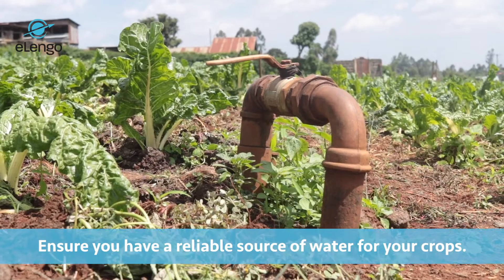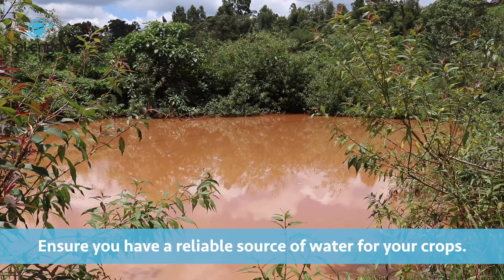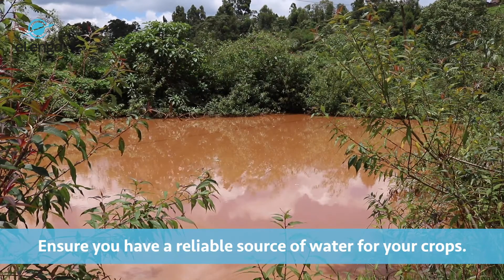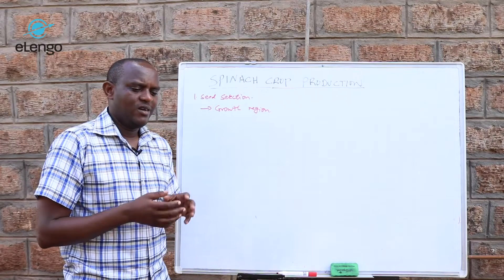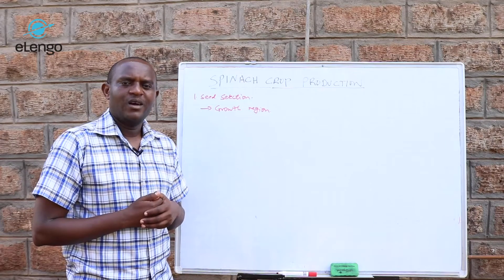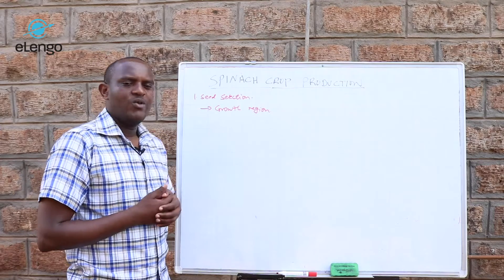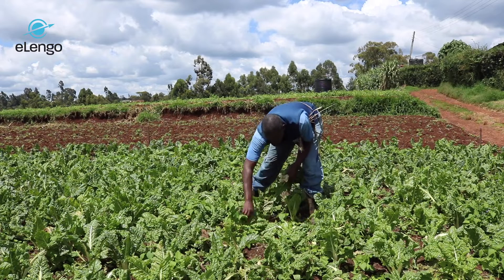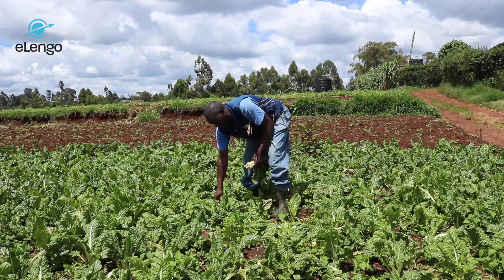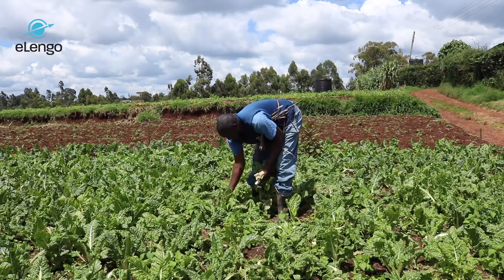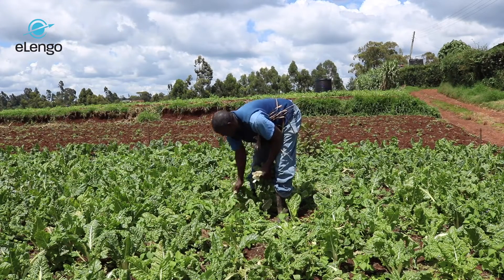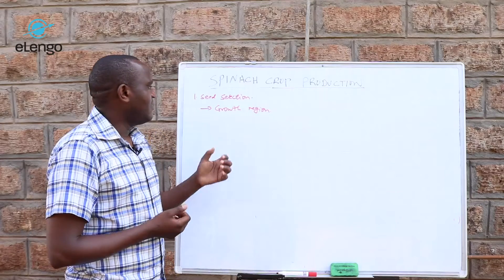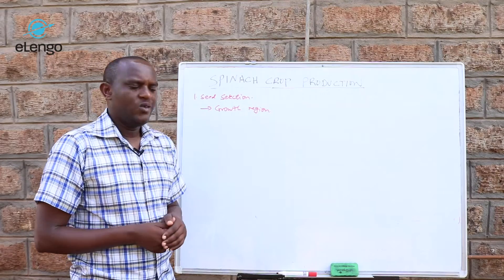Also important is the fertility of the soil or the land where you grow the crop, because spinach is a heavy feeder — it needs good, fertile soil. Once you grow it, you can harvest for between six months to one year, harvesting on a weekly basis or maybe after every ten days. So it is a crop that can grow in all regions.